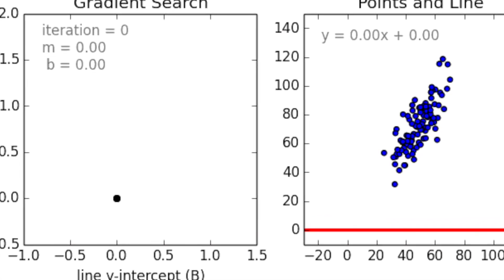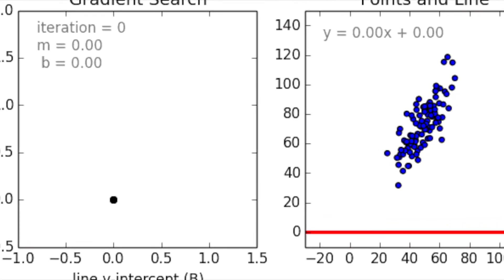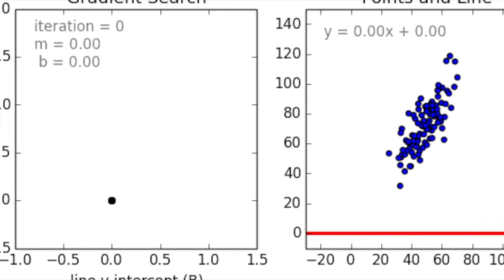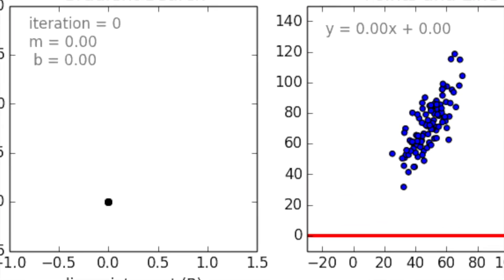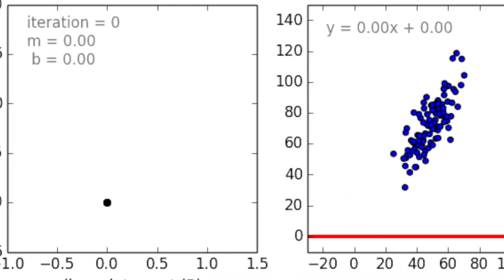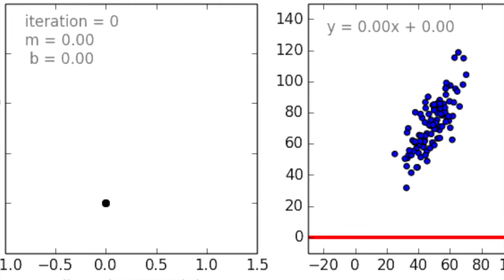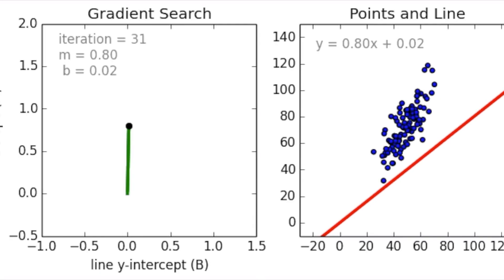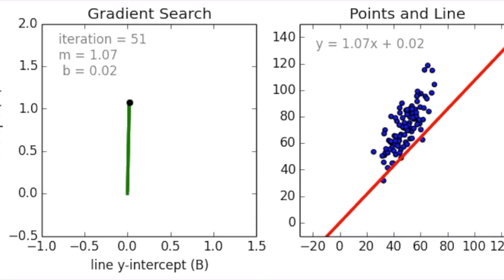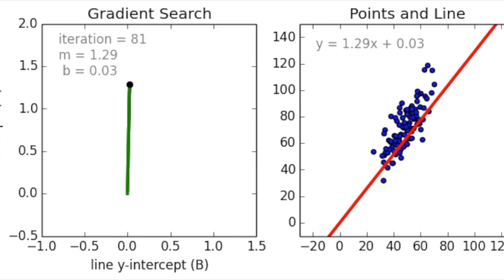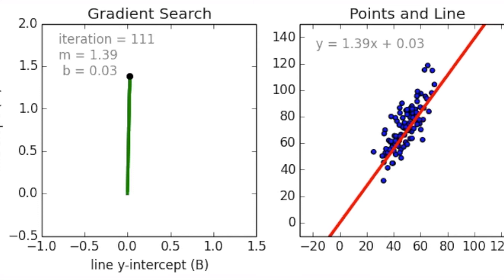Now with your best fit line, you can make accurate predictions on what price a house will be sold at given the area in square feet. Here's linear regression in action. There you go — you have learned how exactly a machine learns.